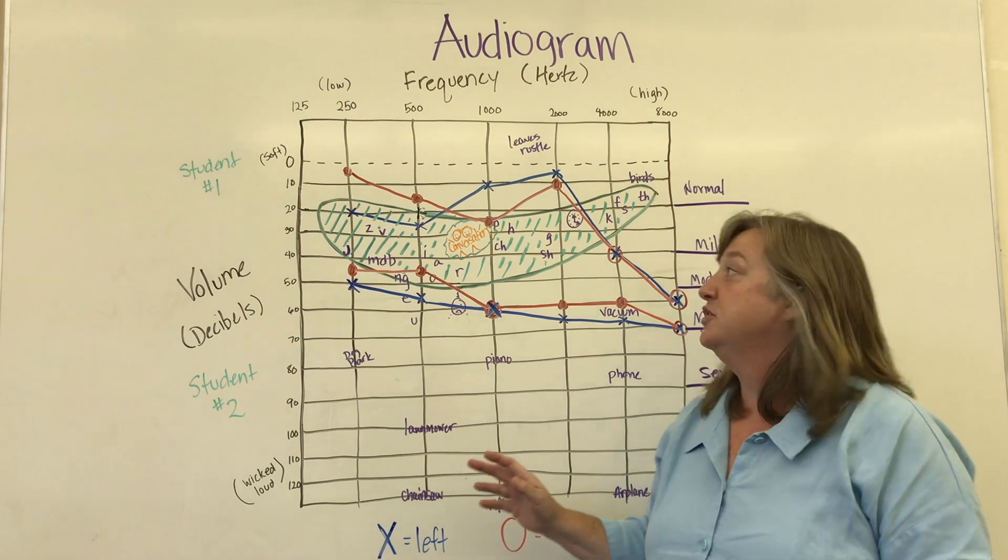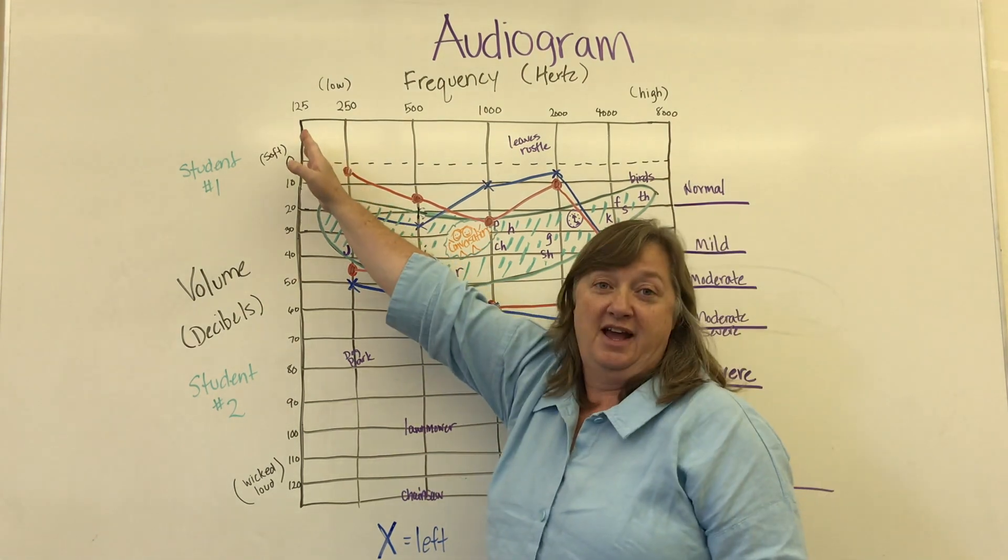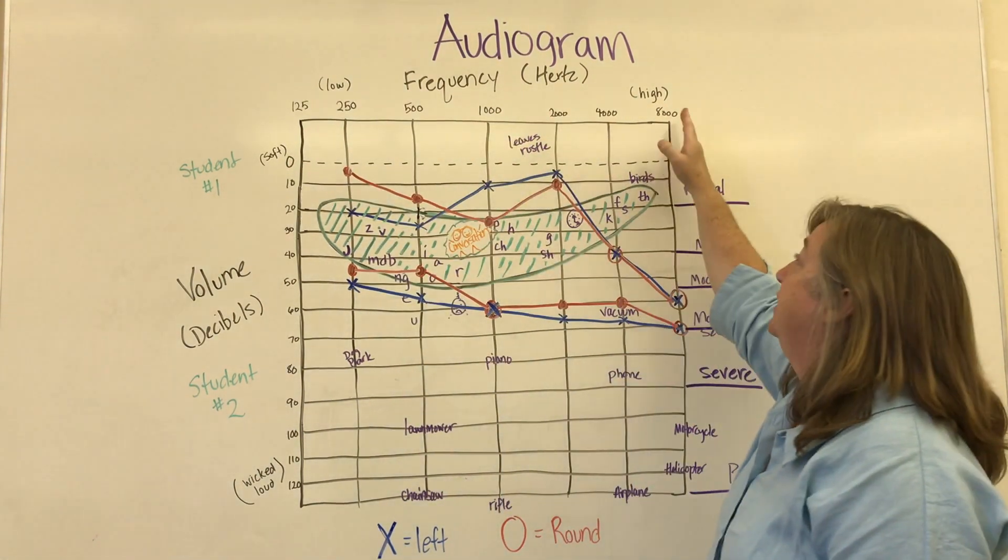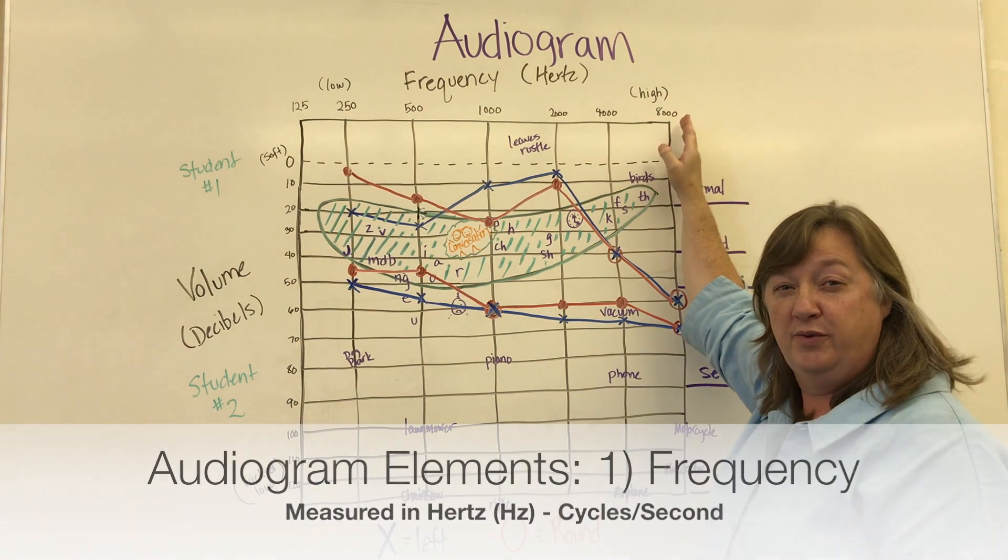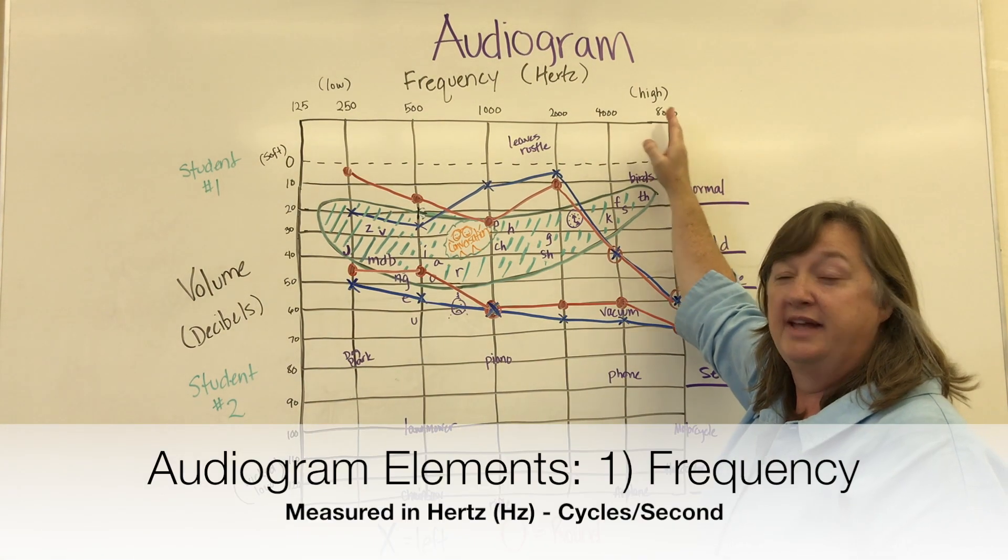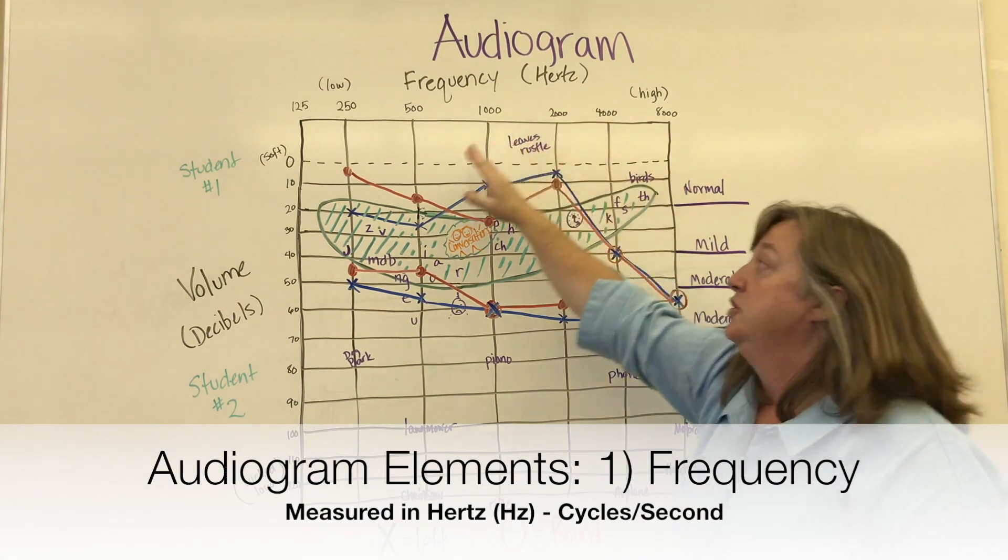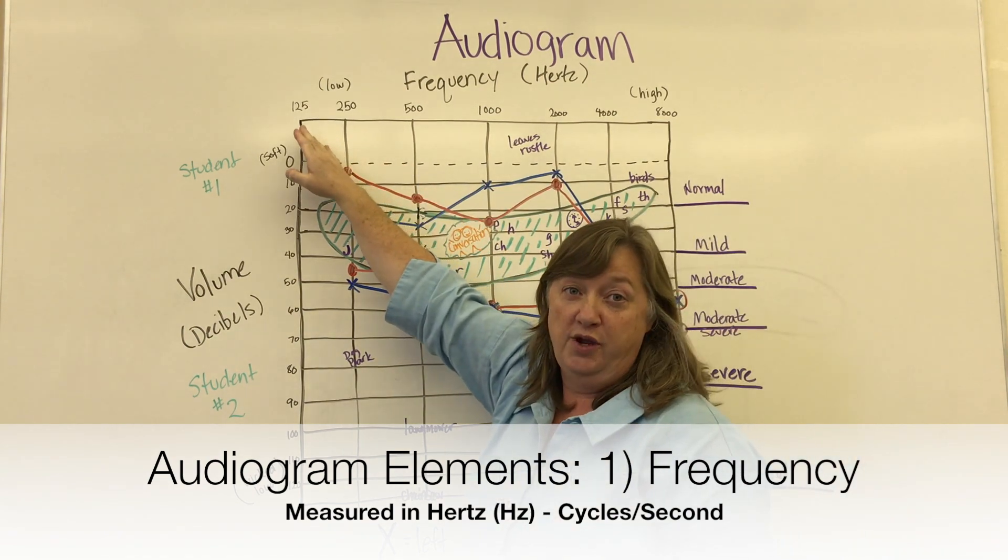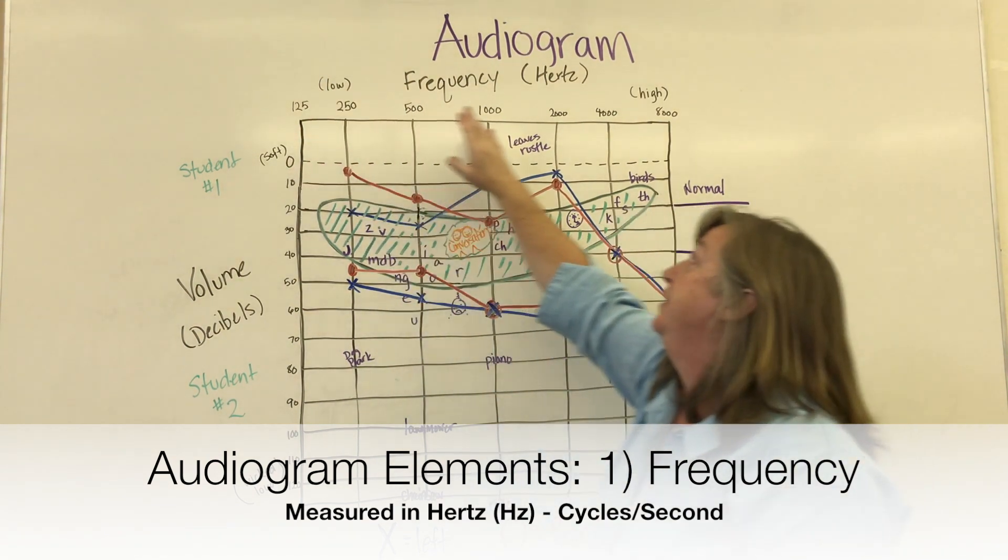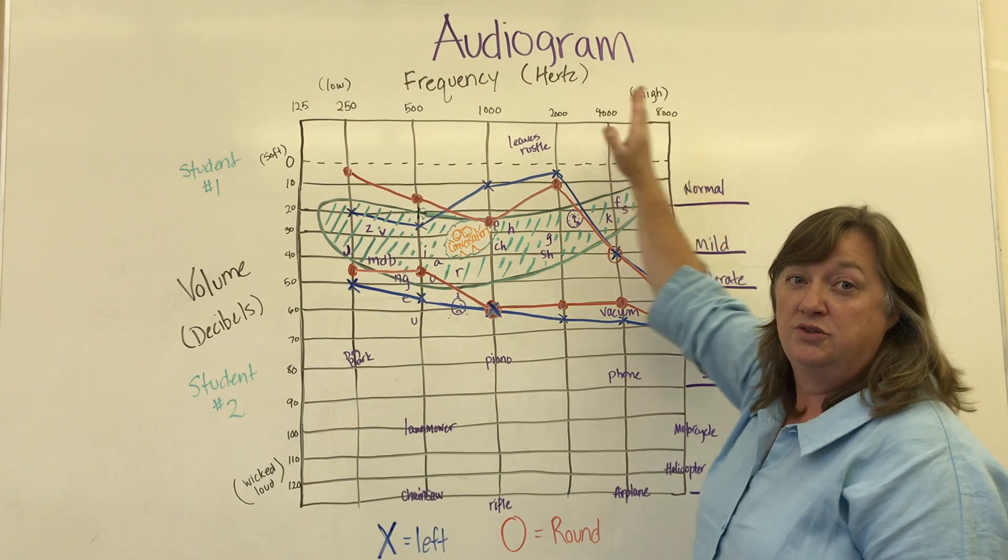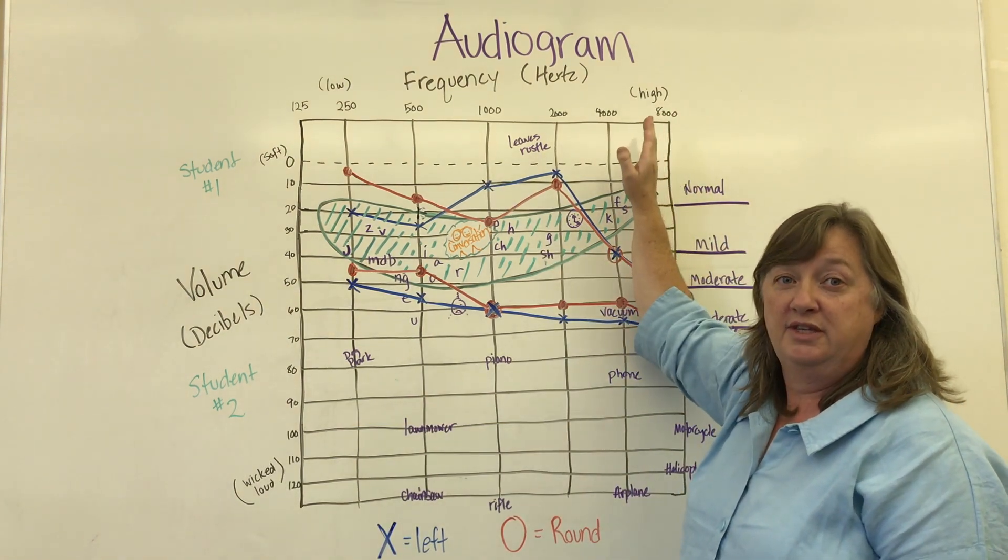First of all, from this side to this side on the top is the frequency of sound, and that's measured in Hertz. So this is a very low frequency sound and this is a very high frequency sound. So across the top we have frequency.